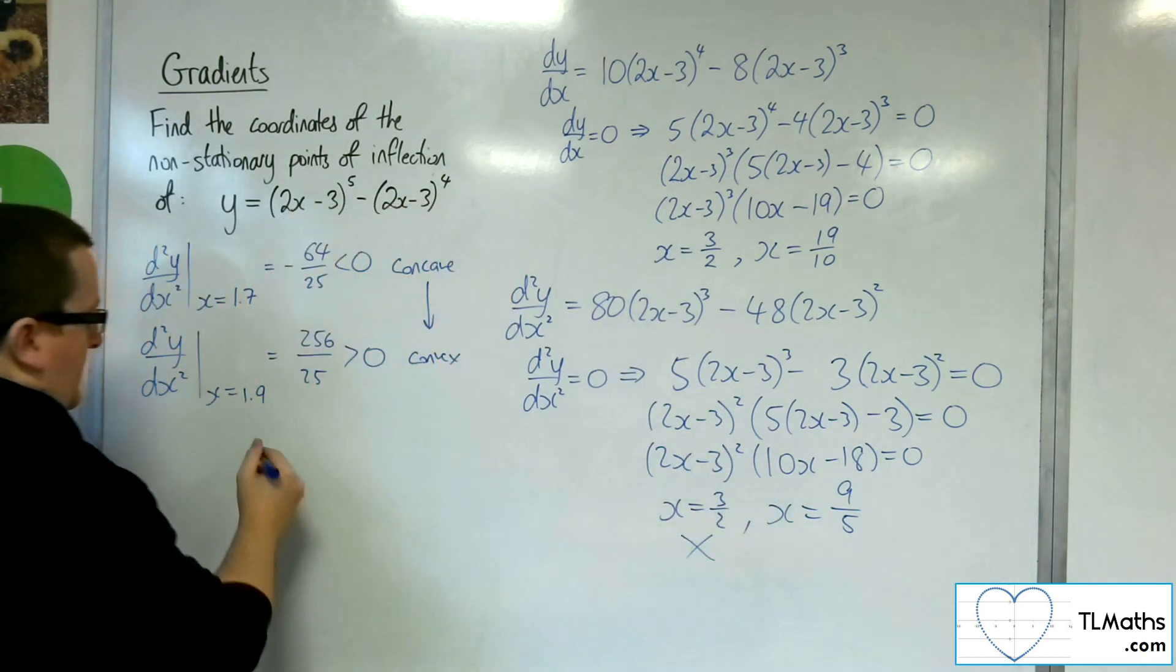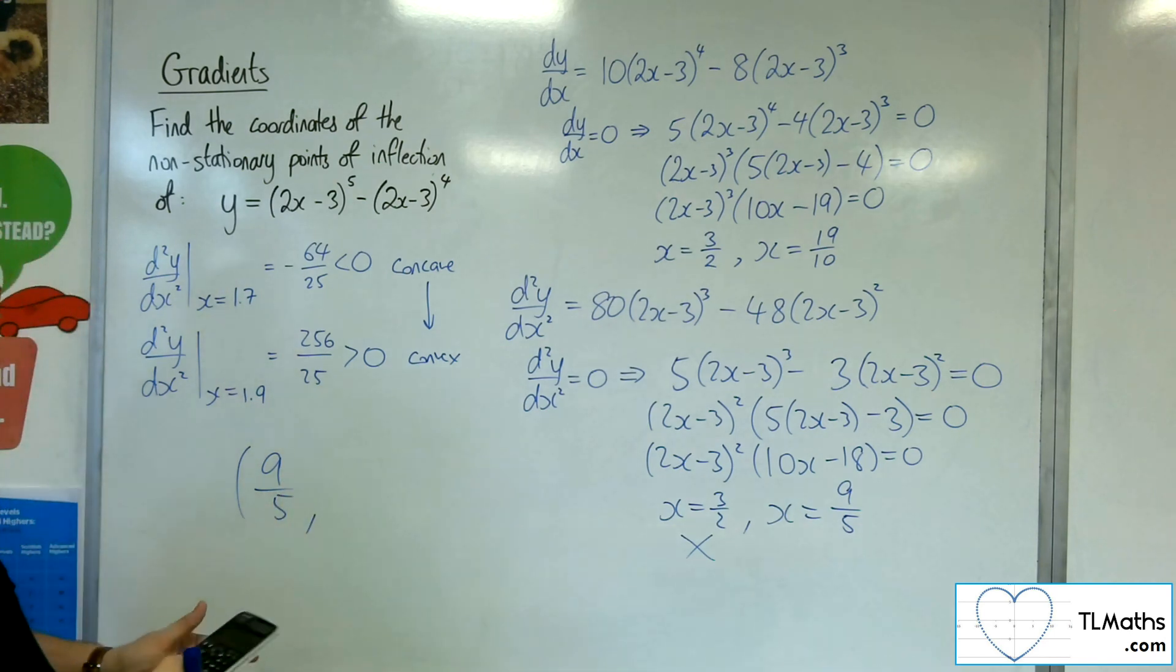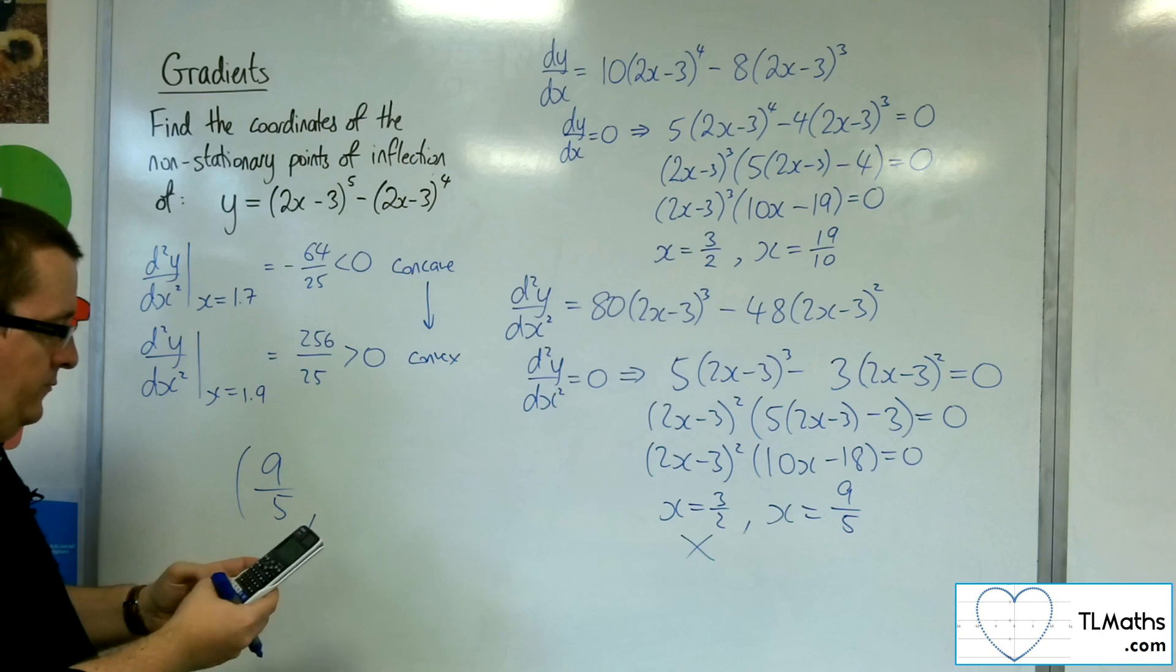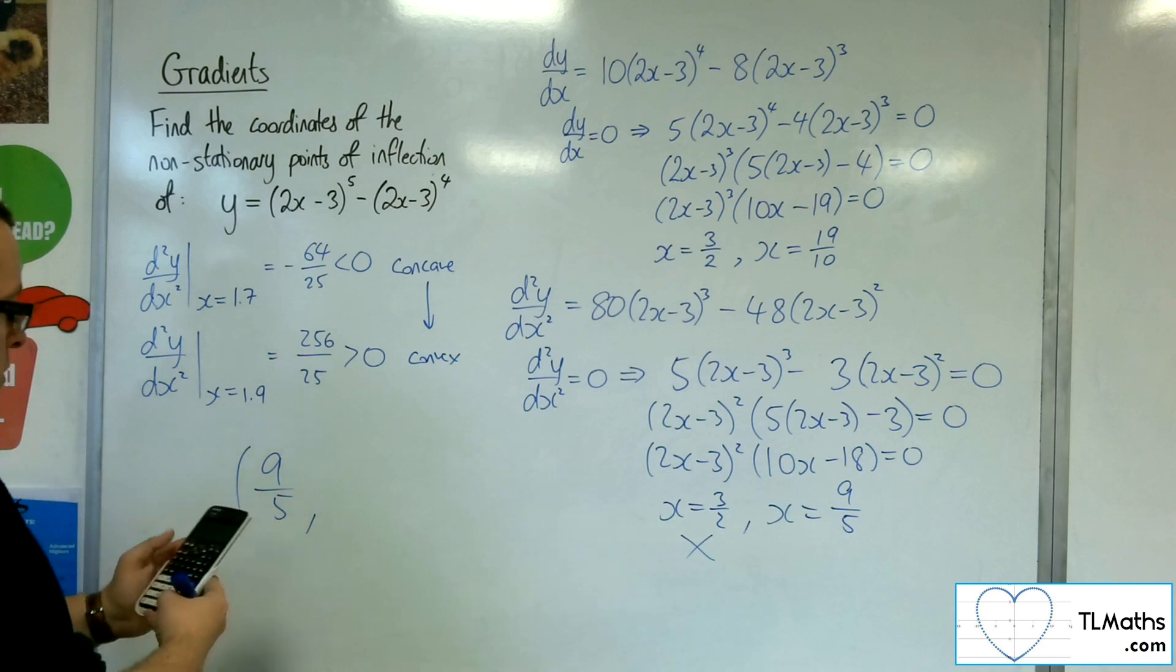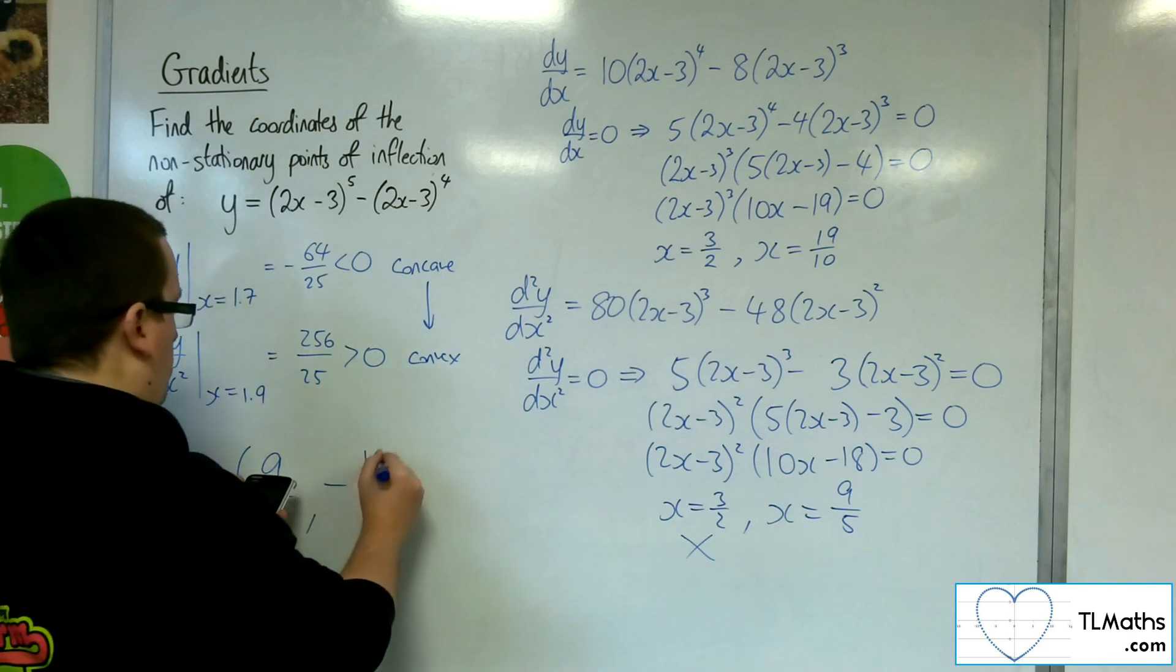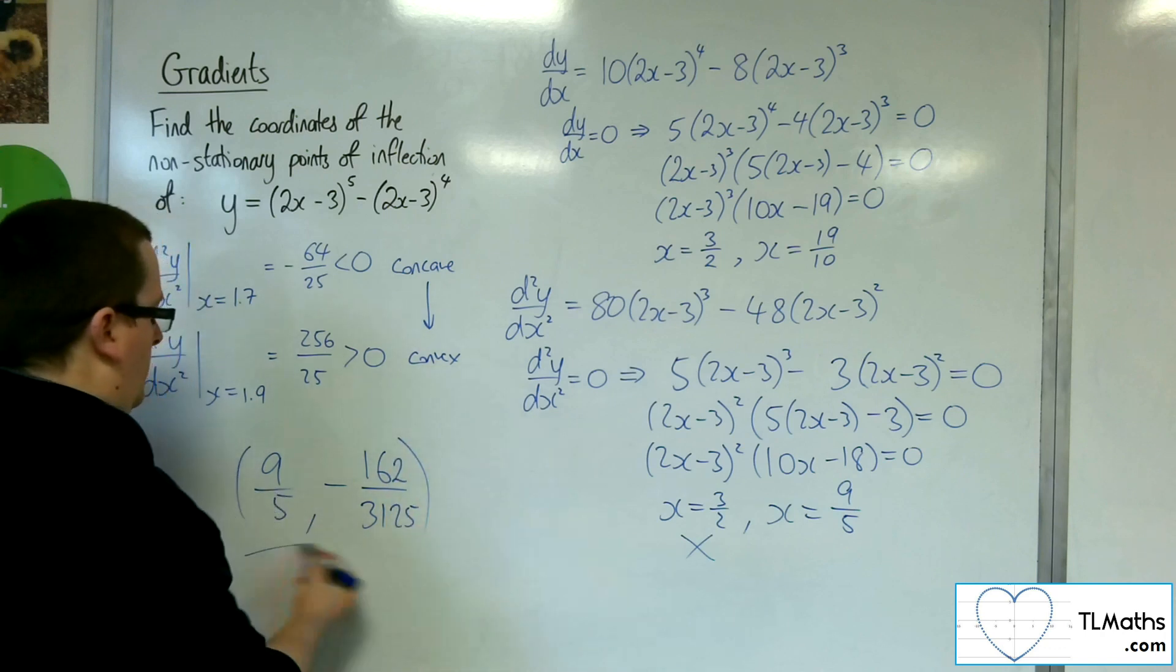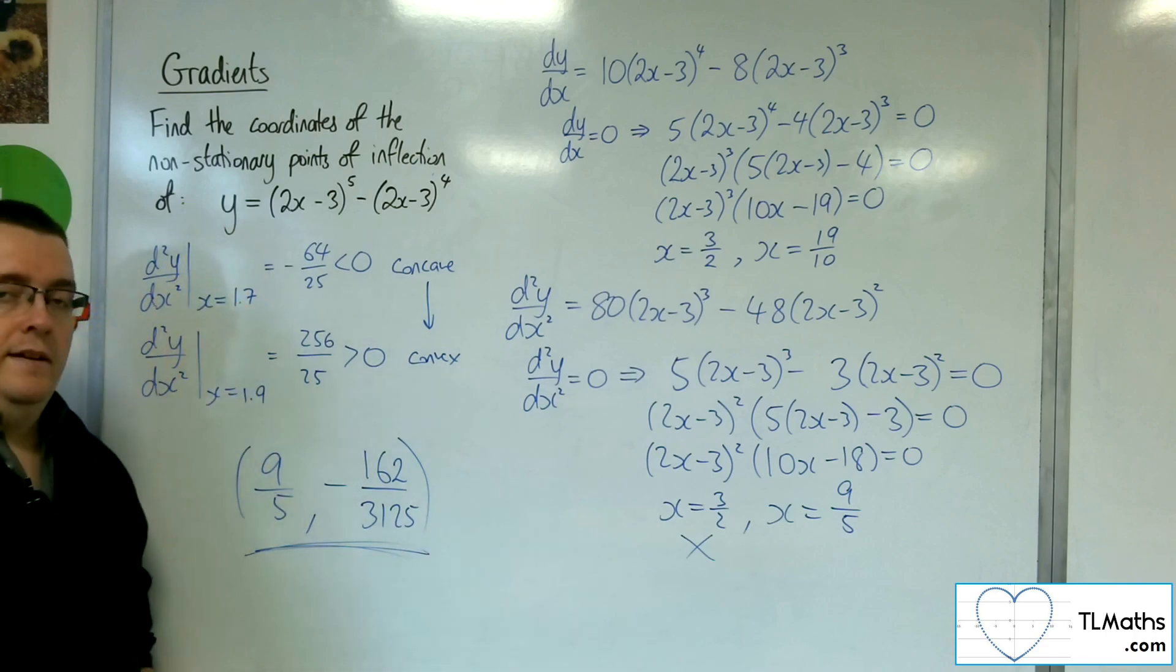So x is 9 fifths is definitely a non-stationary point of inflection. And so substituting 9 fifths into the original equation, to the power of 5, take away 2 lots of 9 fifths, take away 3 to the power of 4, and we get minus 162 over 3,125. And that is the non-stationary point of inflection for that curve.